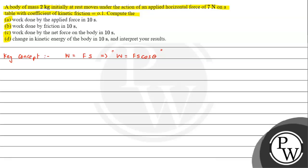So this is what we need to remember. Work done can also be written as F̄ · S̄ (dot product of force and displacement vectors). This is defined for a constant force. For a variable force, we consider force constant over a small displacement, so we write dW = F̄ · dx̄, and integrating this result we get the total work done. That covers everything about work done we need to keep in mind.